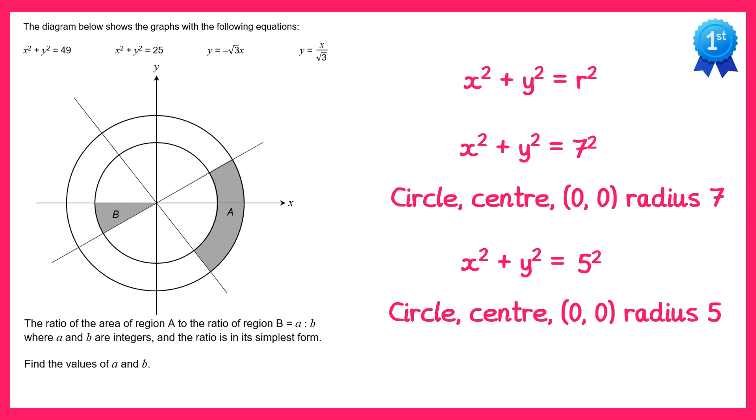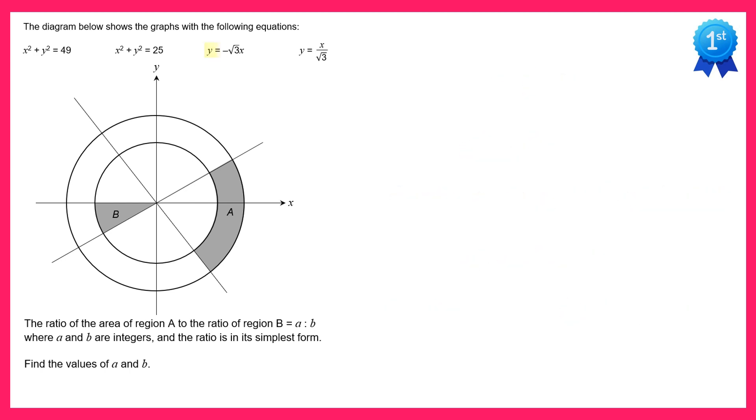So the two circles here have radii 5 and 7 units. This will be useful later on in the question. Now let's look at the next two graphs: y equals negative root 3 x and y equals x over root 3. The first one has a negative gradient so this one here is the positive gradient and this one here is the negative gradient.